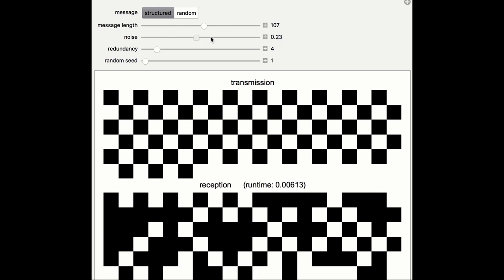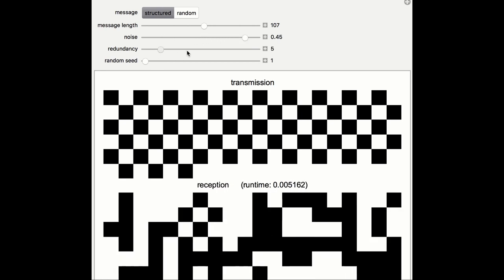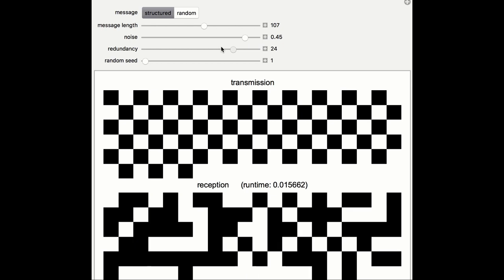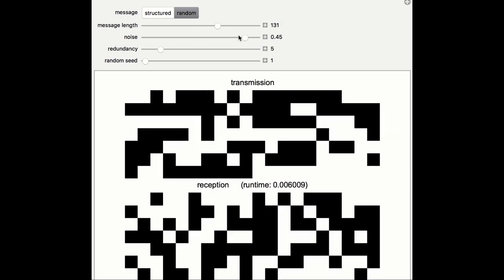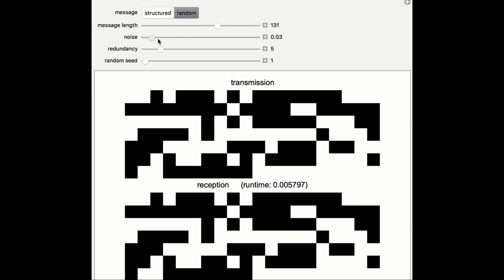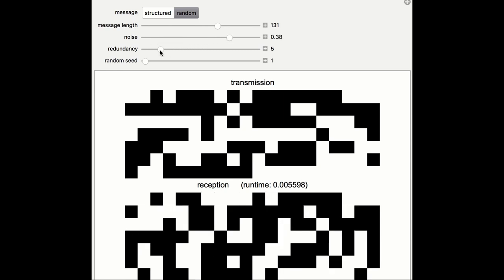So we have here two messages, one highly structured and one random looking. We can add noise and see how the structured message will start looking random, and to counteract that loss we can add redundancy to be able to recover the original message.